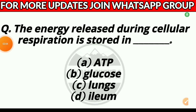Question 19. The energy released during cellular respiration is stored in: Option A, ATP; Option B, glucose; Option C, lungs; or Option D, helium. Answer: Option A, ATP.